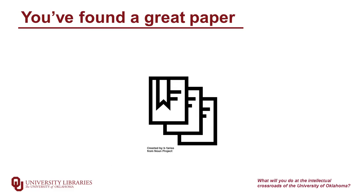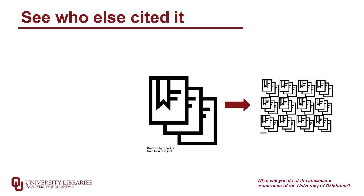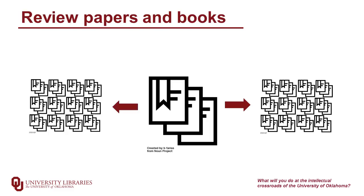Once you've found a great paper, there's another strategy you can employ. You can see who they cite, and you can also see who cited them. Review papers and books especially provide a good opportunity for this approach, as they try to cover what's going on in a field, but this works for the experimental or primary literature as well.